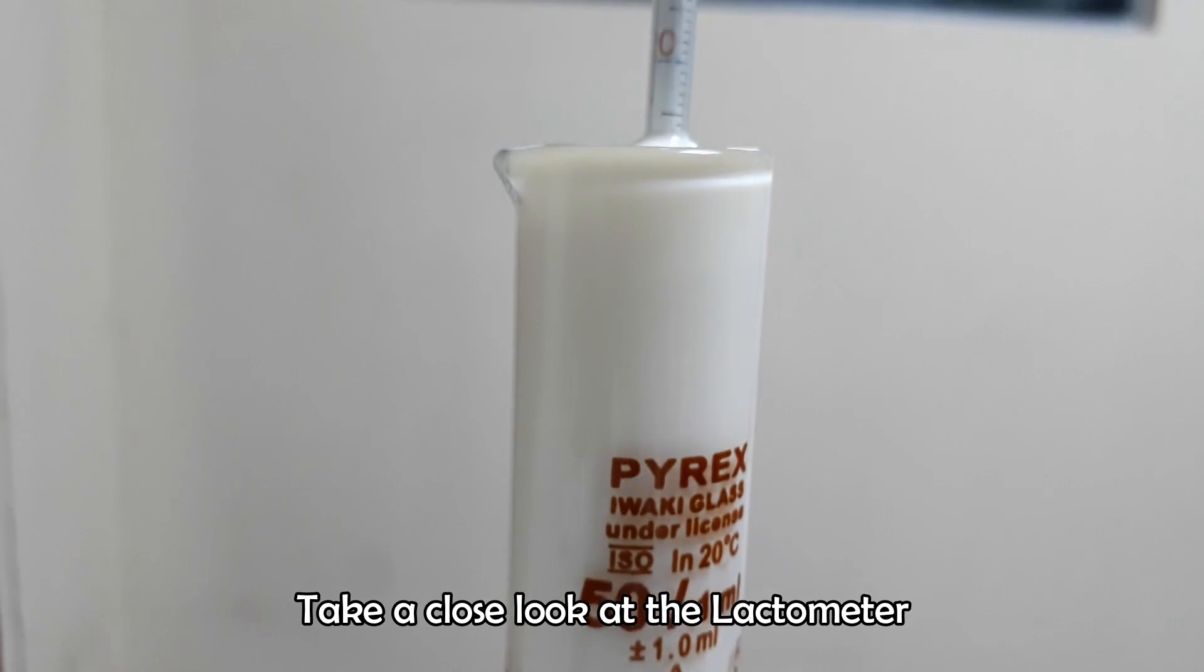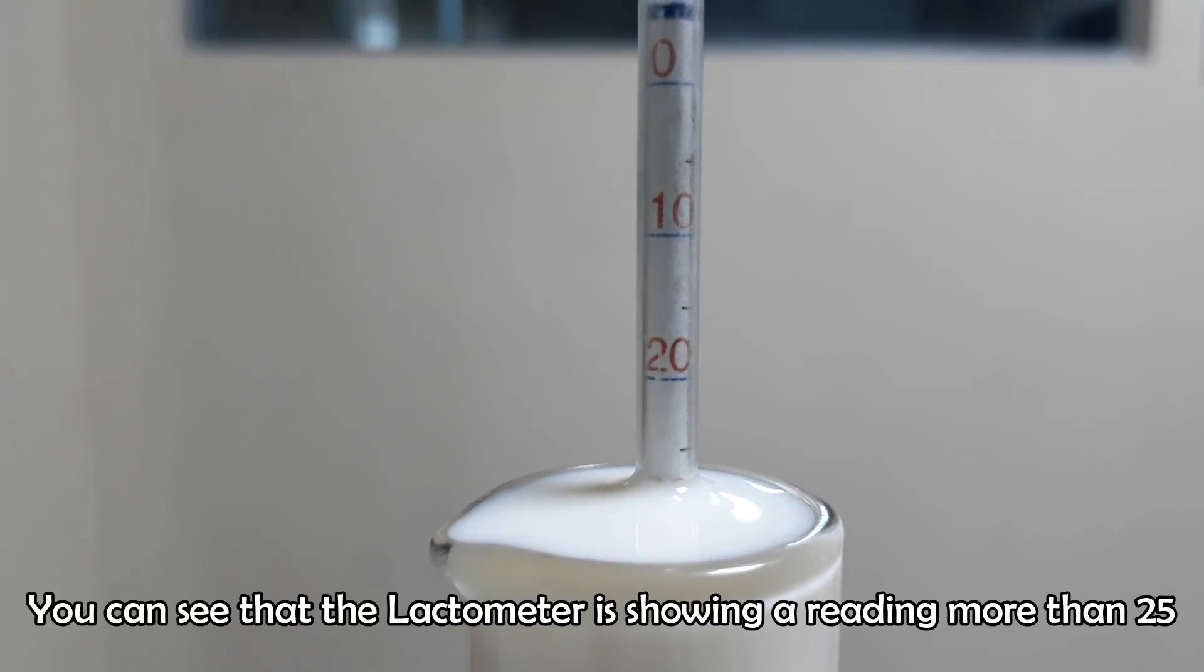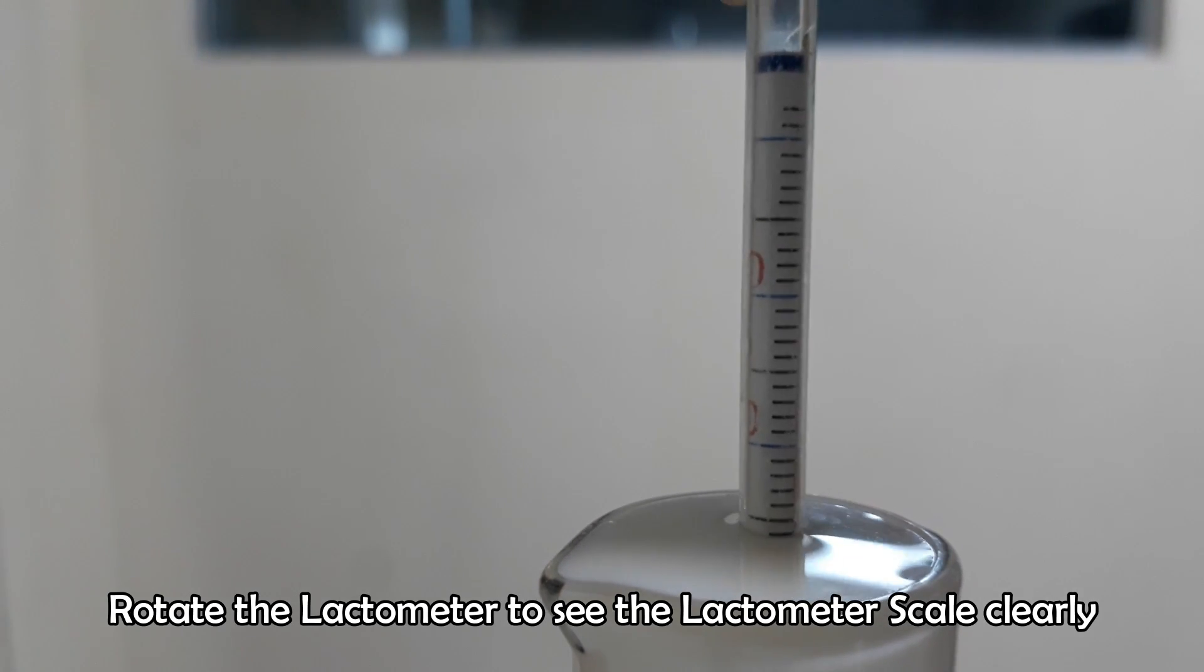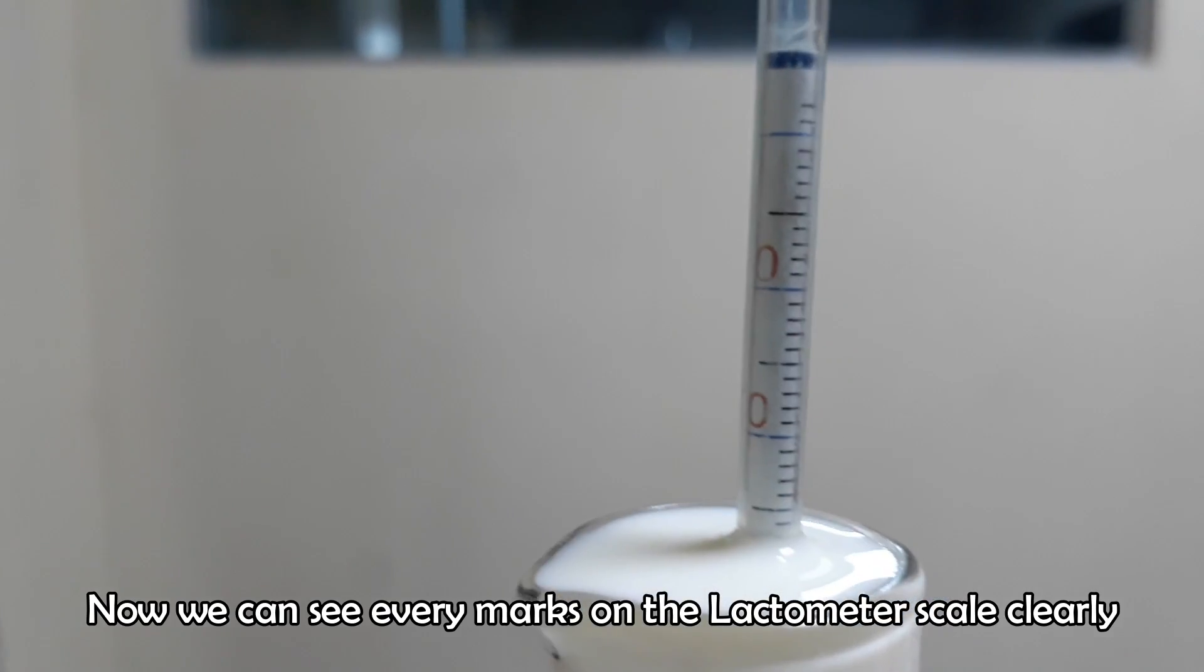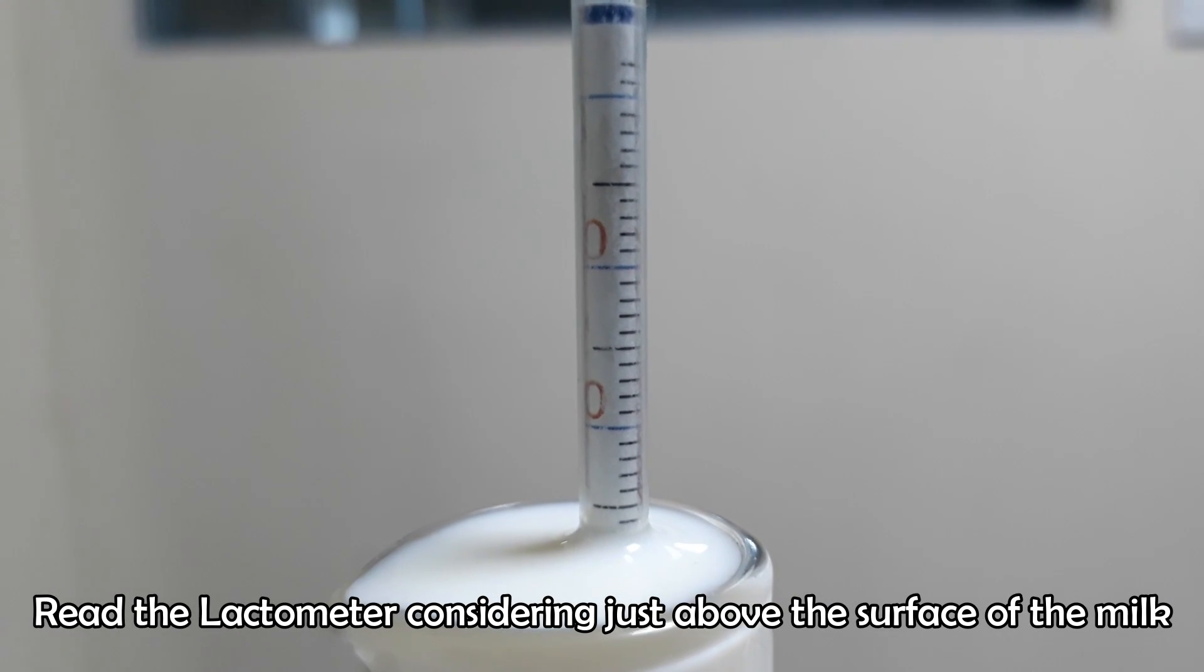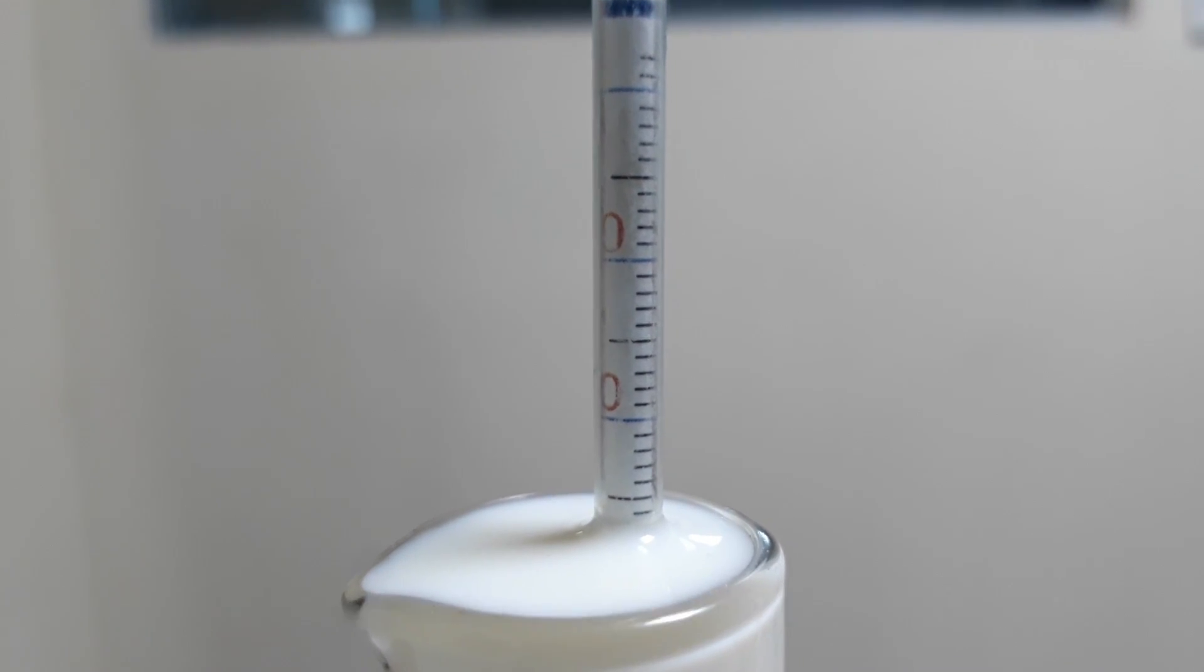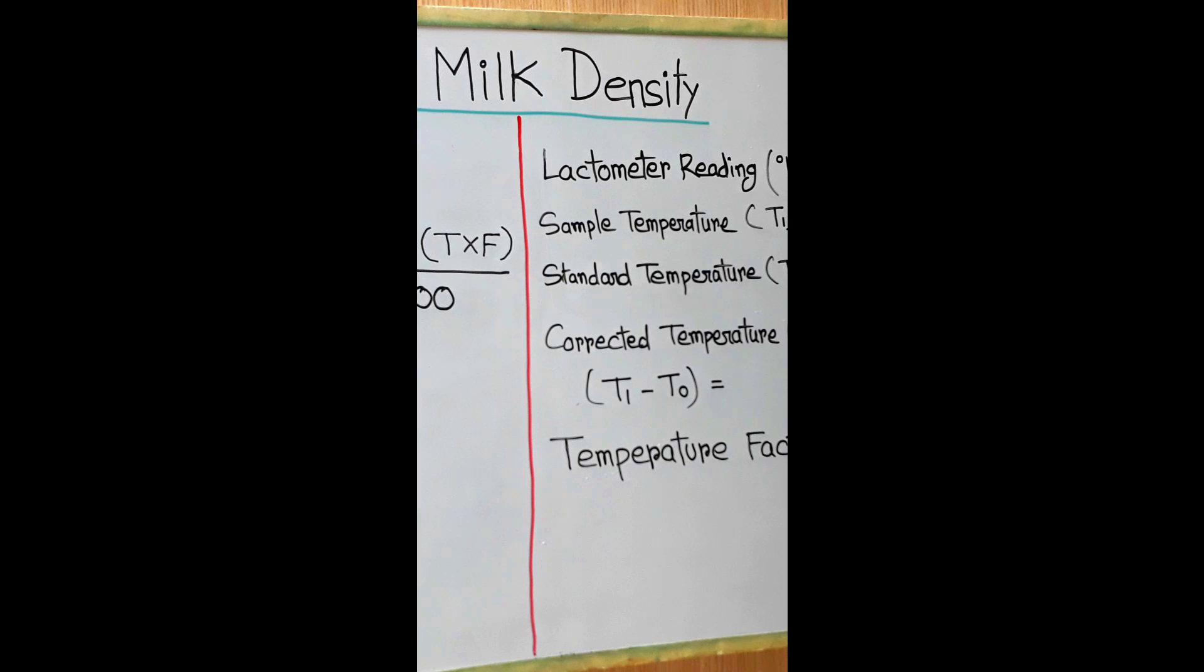Take a close look at the lactometer. You can see it's showing a reading more than 25. Rotate the lactometer to see the scale clearly. Read the lactometer just above the surface of the milk. We got the lactometer reading as 27 degrees. Note the reading. Now we will calculate the density of the sample.